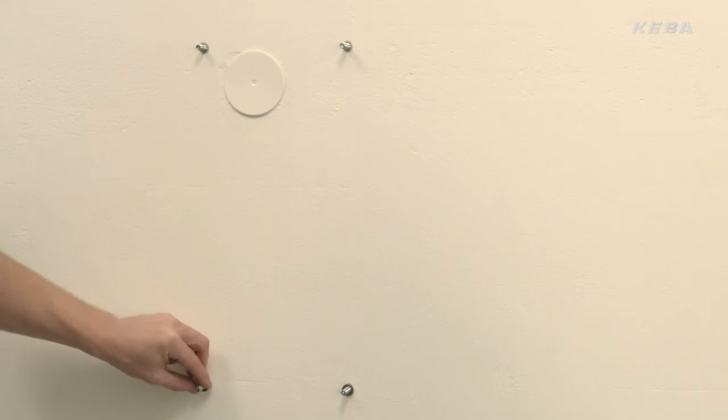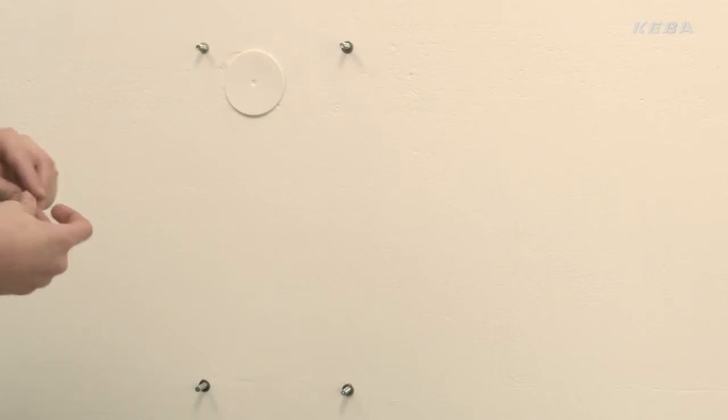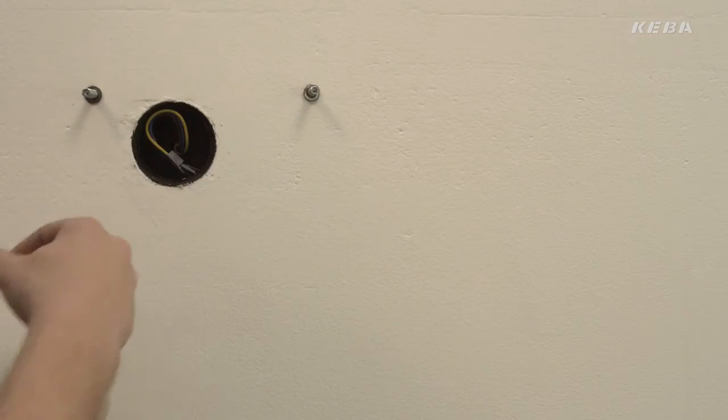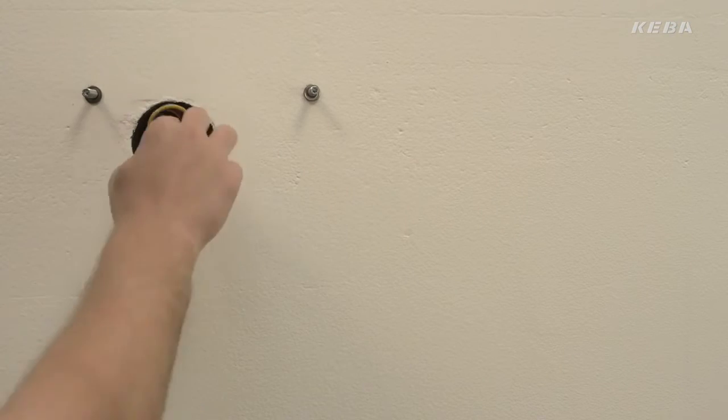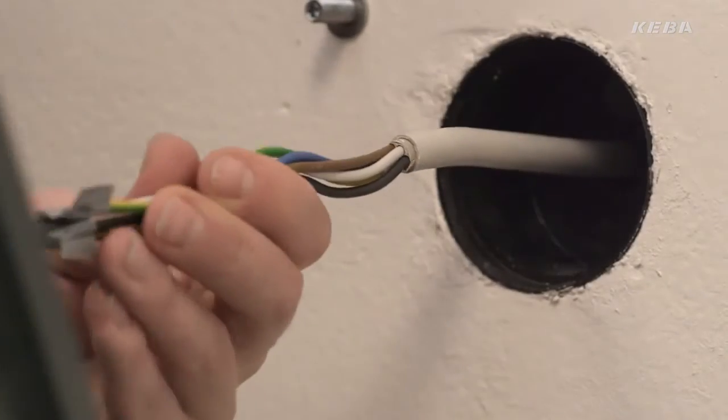For surface mounted installation, use the cable gland supplied. This prevents moisture ingress into the housing in both installation cases. Ensure that the connection cable is not live and that it's secured against being switched on.